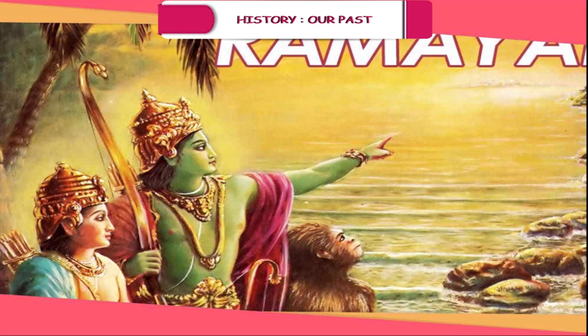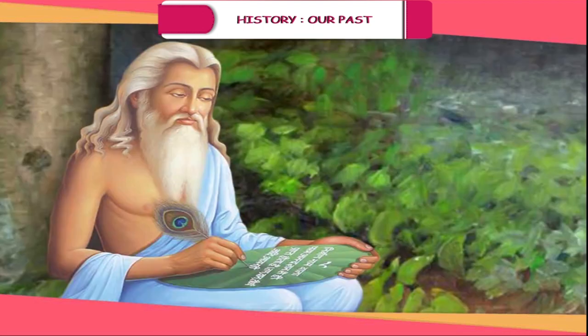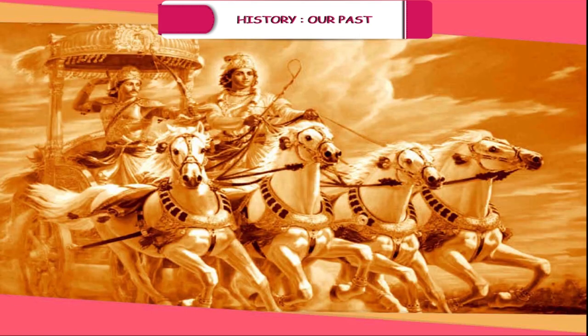Among the epics, Ramayana was written by Maharishi Valmiki and Mahabharata was written by Maharishi Vedvyas. Both convey that truth prevails over evil and they have great religious importance for Hindus. The Bhagavad Gita, which is a part of the Mahabharata, is a philosophical text that sets out the importance of selflessness, duty and devotion to work, spirituality, meditation, etc.